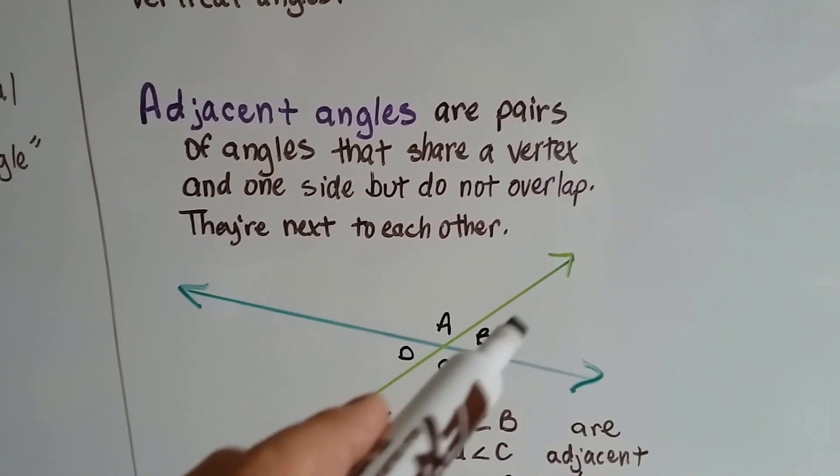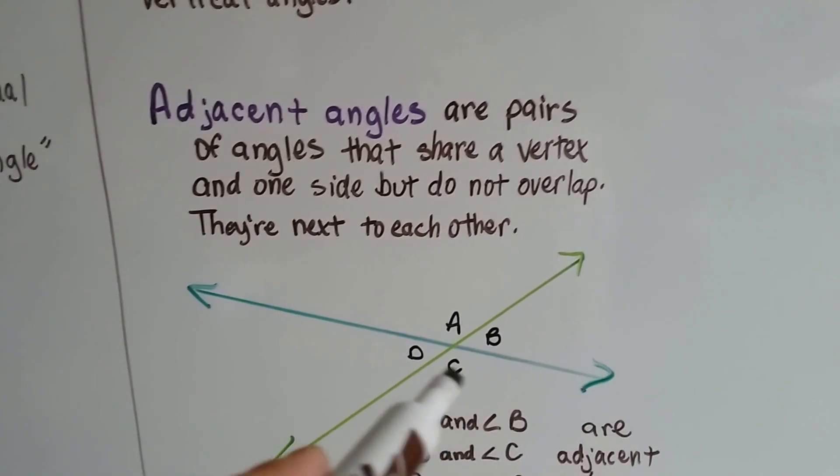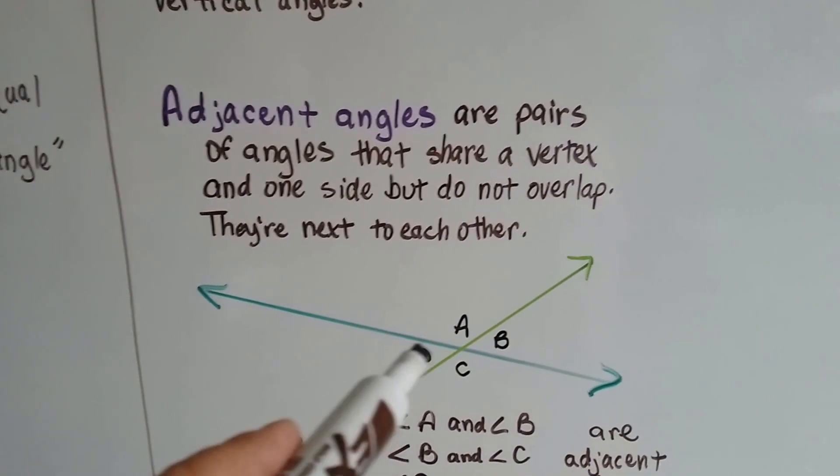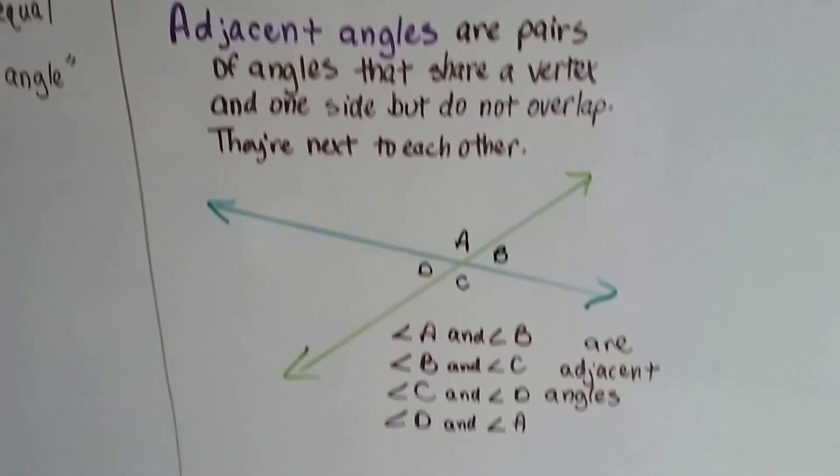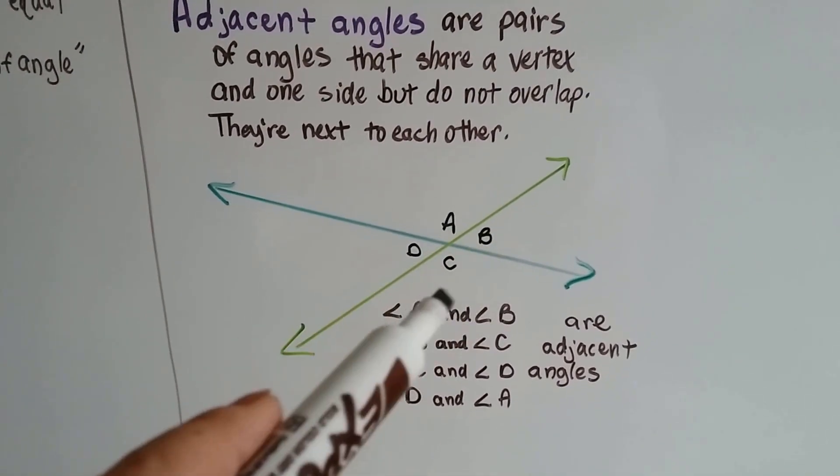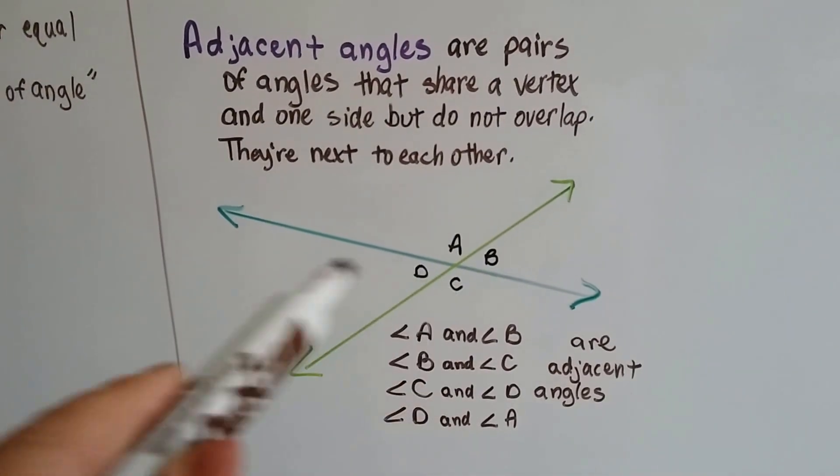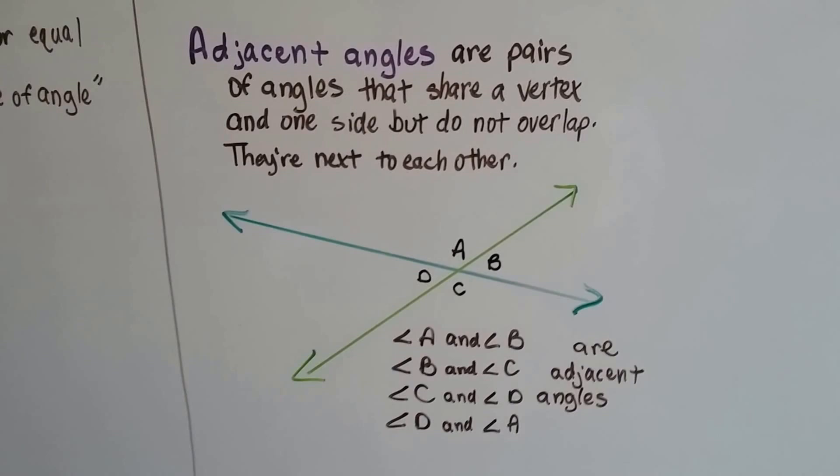And then B and C are adjacent angles, and share this line. And C and D are adjacent angles, and share this line. And D and A are adjacent angles, and share that line. We could go around like a box with the adjacent angles.